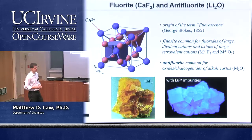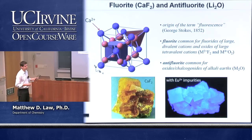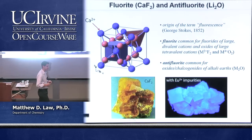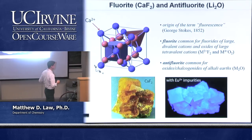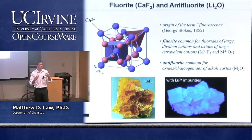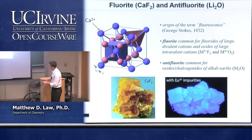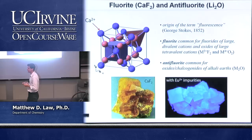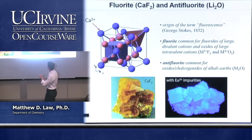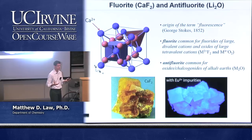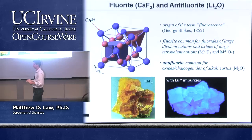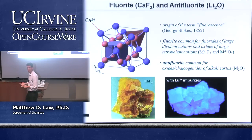Fluorite has an interesting history. By itself the crystal is electronically inactive with a very large HOMO-LUMO gap. But natural fluorite crystals are often doped with impurities that cause them to luminesce — for example, europium-doped fluorite glows a beautiful blue under UV light. George Stokes studied fluorite in the mid-1800s, and the term 'fluorescence' originates from this mineral. Fluorine the element is also named after calcium fluoride.